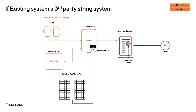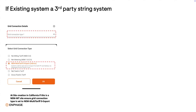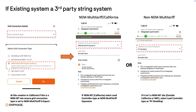If the existing system is a third-party string inverter system, you'll follow these steps. You must create a new site. If the site is in California and it has NEM 1 or NEM 2 status, select NEM multi-tariff zero export for the grid connection type. If the existing system is on the net billing tariff, aka NEM 3.0, select that option. If the site is outside California, select the applicable grid connection type. Then you'll be prompted to select an option for integrated load control configuration. If it's a NEM multi-tariff system, select NEM multi-tariff expansion. If it is a net billing tariff system or a site outside California, select PV shedding.